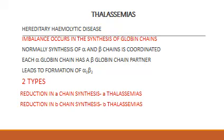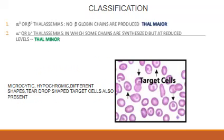There are two types of thalassemia. There could be a reduction in alpha chain synthesis, in which case it is known as beta thalassemia. It is designated alpha 0 or beta 0 thalassemia when no beta globin chains are produced — this is known as thal major. It is called alpha plus or beta plus thalassemia when some chains are synthesized but at reduced levels — this is known as thal minor.